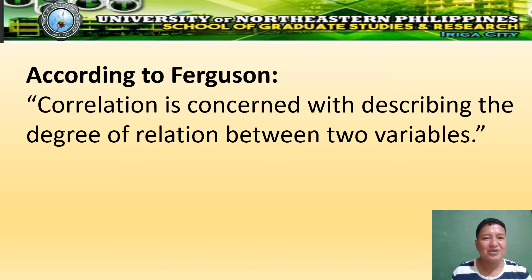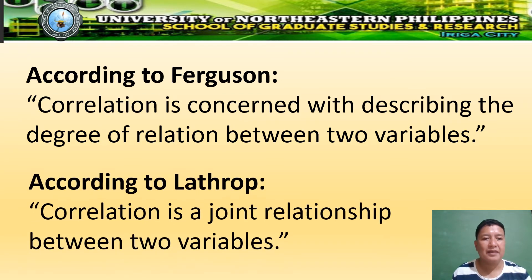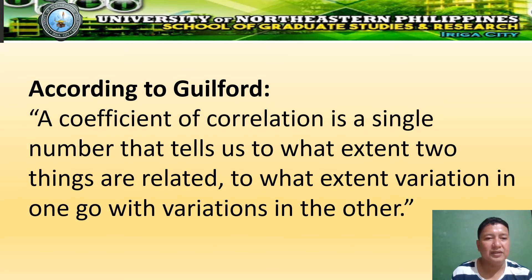According to Ferguson, correlation is concerned with describing the degree of relation between two variables. To Latrap, correlation is a joint relationship between two variables. To Gilford, a coefficient of correlation is a single number that tells us to what extent two things are related, and to what extent variation in one co-varies with variation in the other.